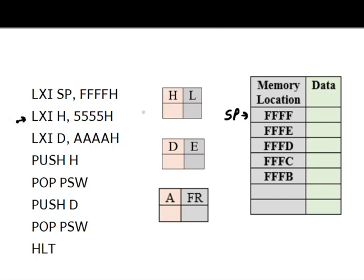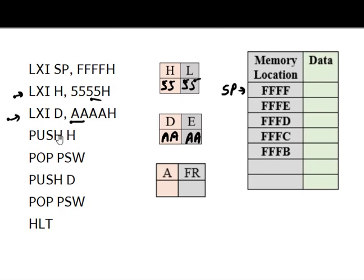Then we use the PUSH H instruction, which pushes the contents of HL onto the stack. The stack pointer first decrements to FFFE and the contents of L (55) are stored there; then it decrements again to FFFD and the contents of H (55) are stored there.